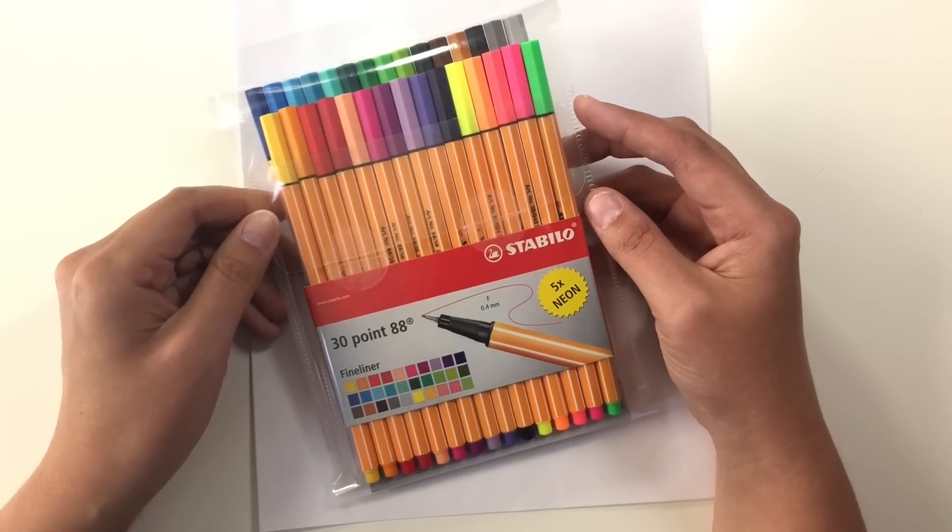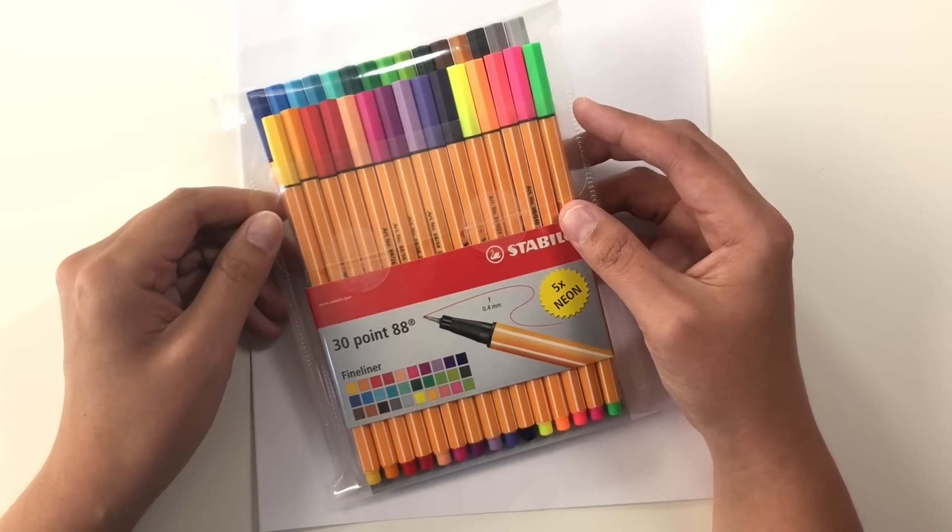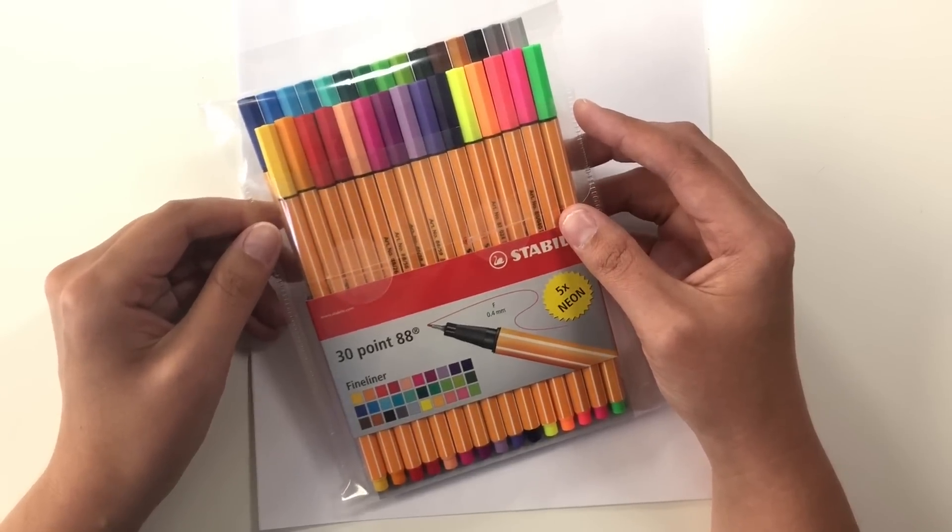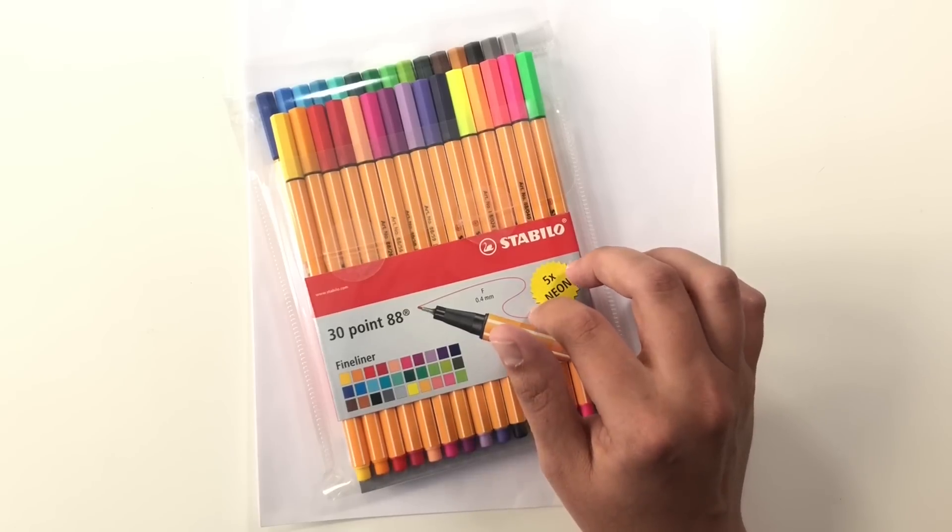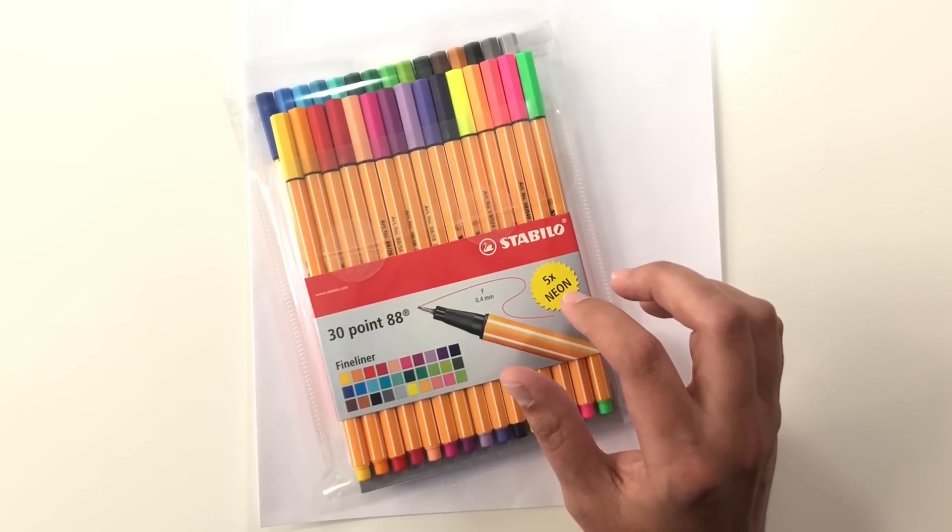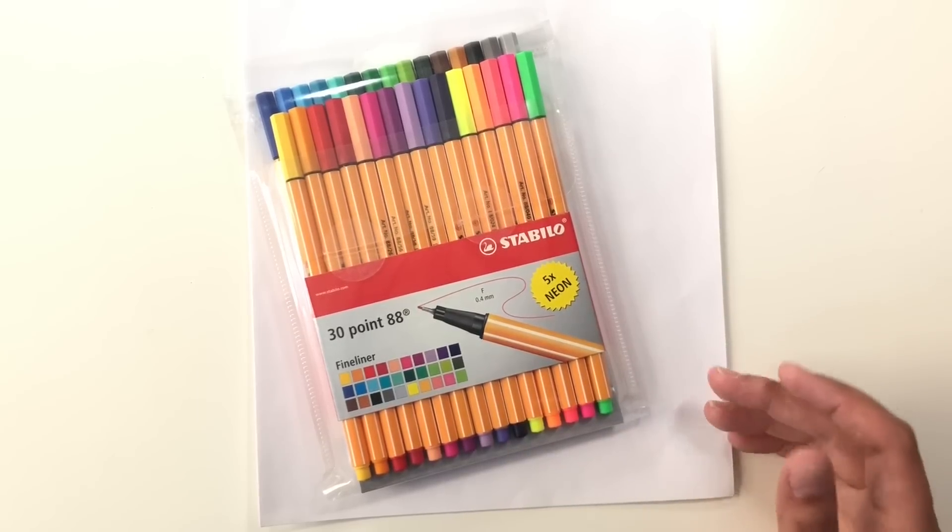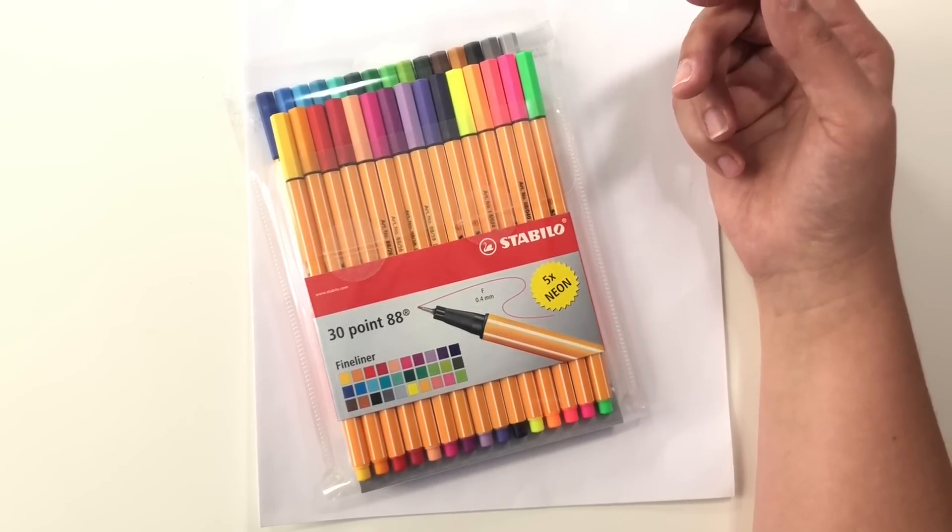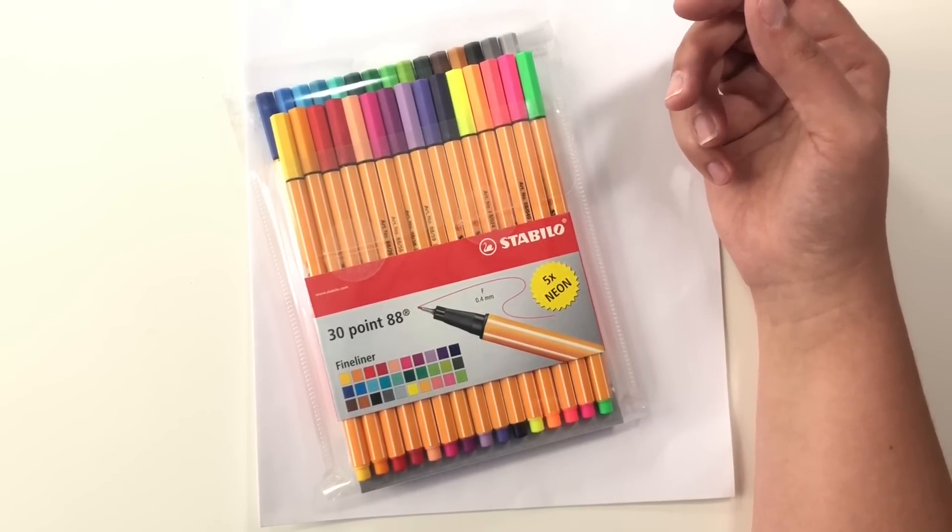This 30 pack, which includes five neons, is around $21 at the time of the recording of this video on Amazon. Originally, these were the only colors. This 30 pack was the only colors available in this style of pen. They had other colors for other pens, but they have recently bumped up their selection to a total of 47 Stabilos.